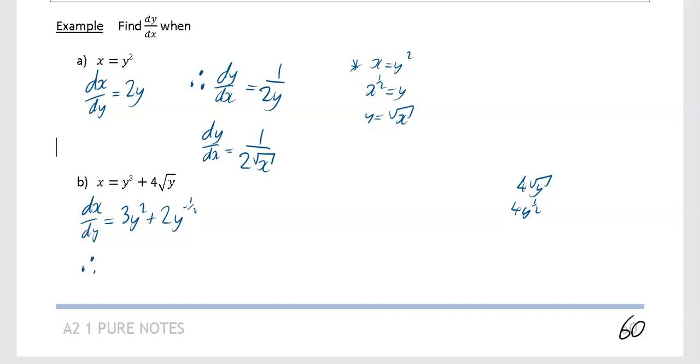So that means, therefore, your dy by dx is just going to be the reciprocal of that. dy by dx is going to be equal to 1 over 3y squared plus 2y to the power of a half. And it would be just as easy just leaving it as that, so that's absolutely fine.